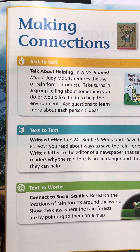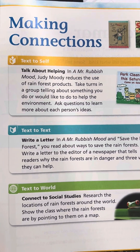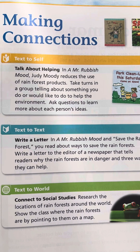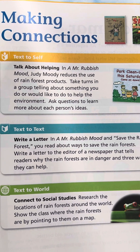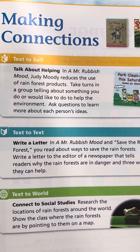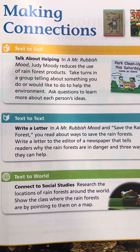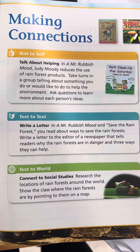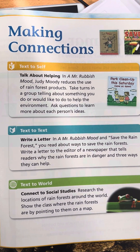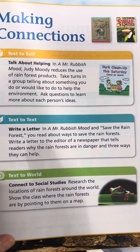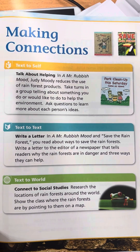Making connections — text to self: Talk about helping. Reduce the use of rainforest products. Take turns in a group telling about something you do, or would like to do, to help the environment. Ask questions to learn more about each person's ideas.